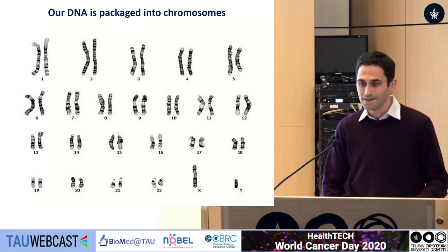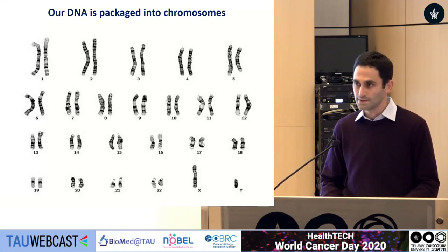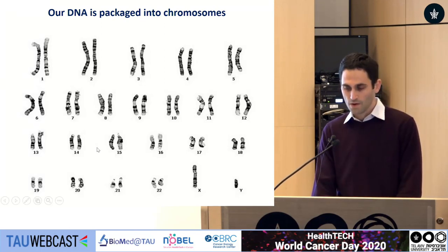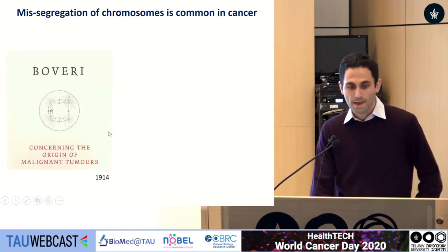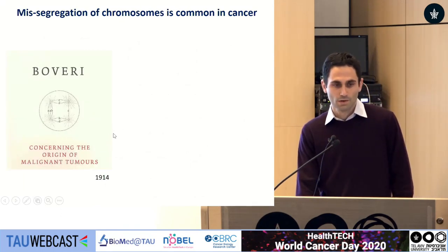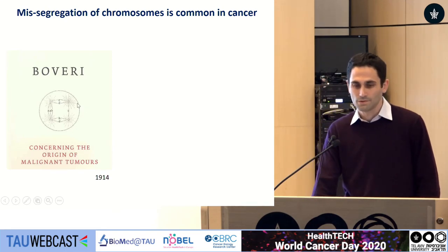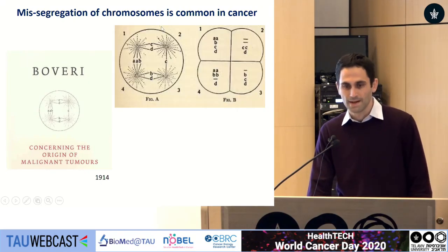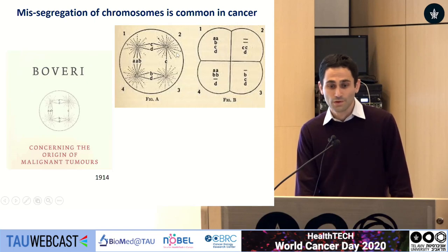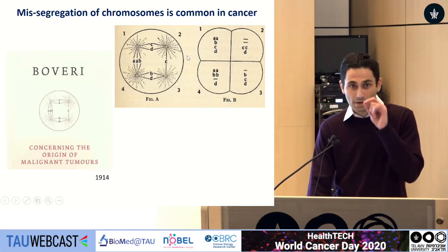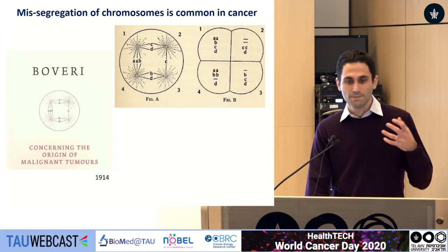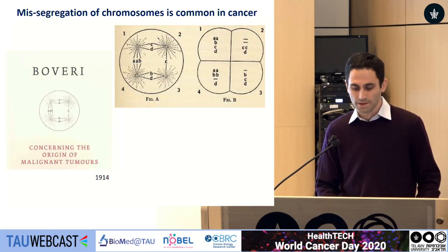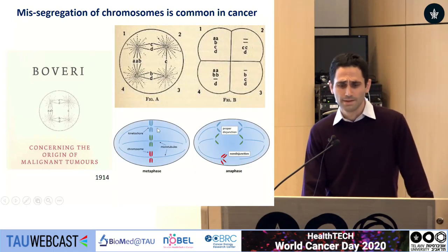Chromosome segregation must be very accurate so that each of the daughter cells would have normal copies of each of our chromosomes. However, in cancer, sometimes this can go wrong. Over a century ago, Theodor Boveri identified chromosome missegregation in metastatic cells when he looked at these cells under the microscope. These are drawings from his original publication where he basically just drew what he saw and identified that in metastatic and cancer cells, chromosomes do not equally segregate.